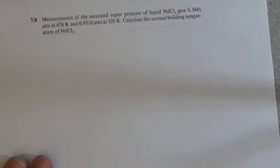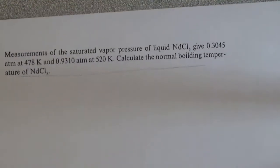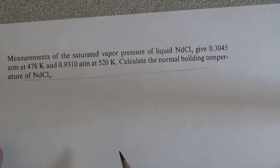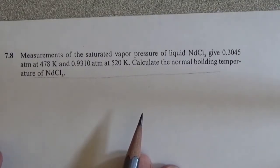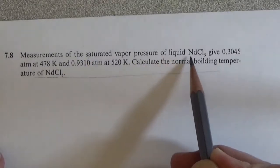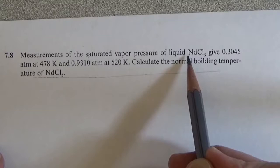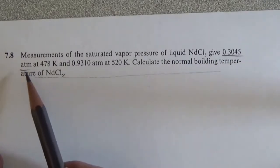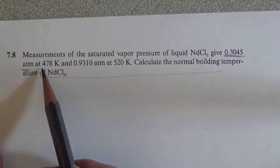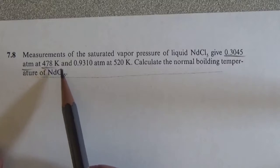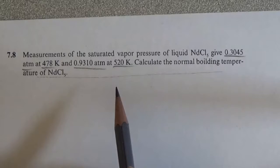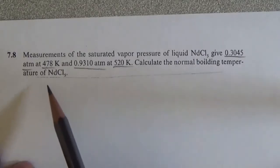This problem gives us the saturated vapor pressure of liquid neodymium chloride at 0.3 atm at 478 K and a pressure of 0.93 atm at 520 K, and asks us to calculate the normal boiling temperature.